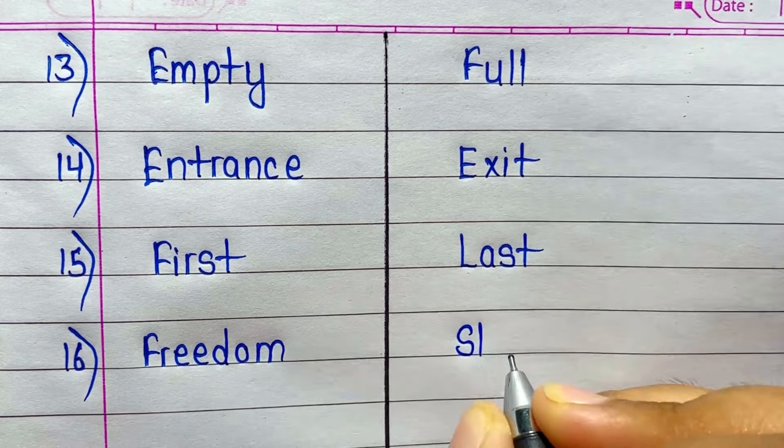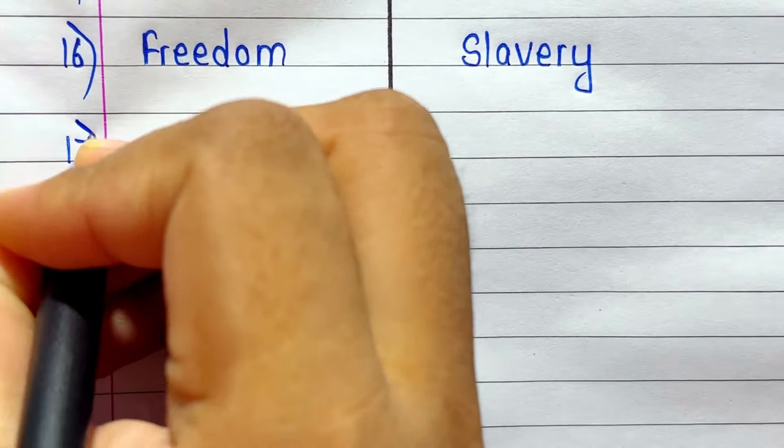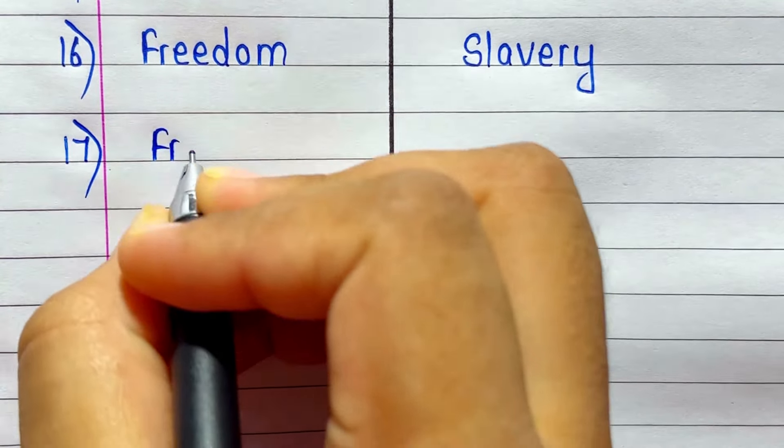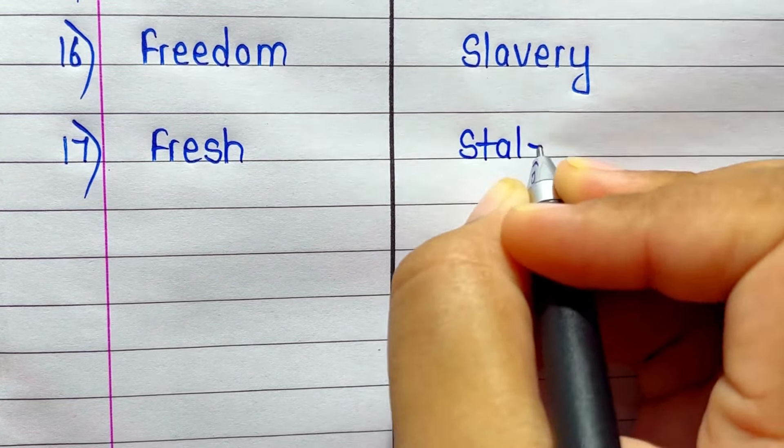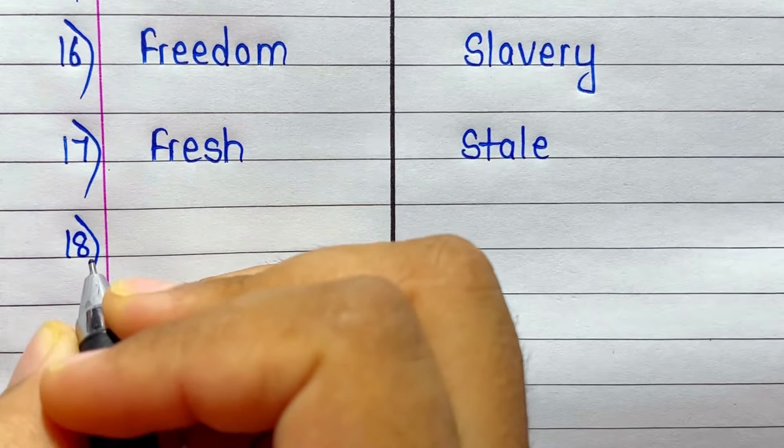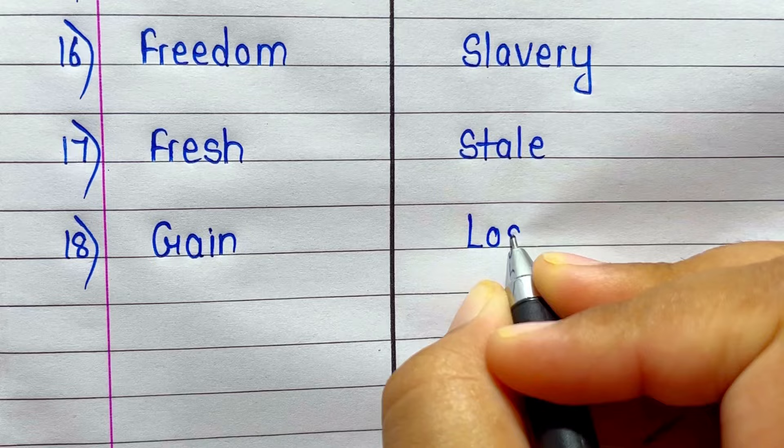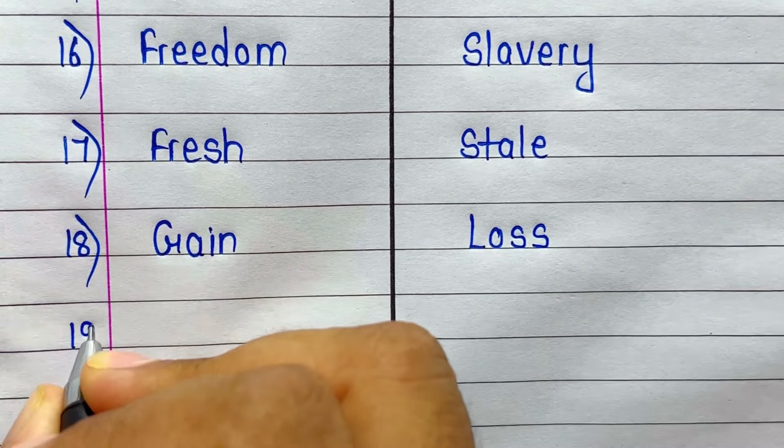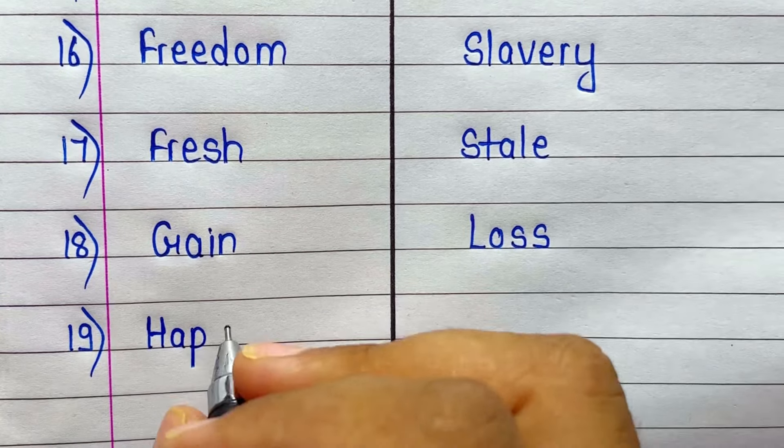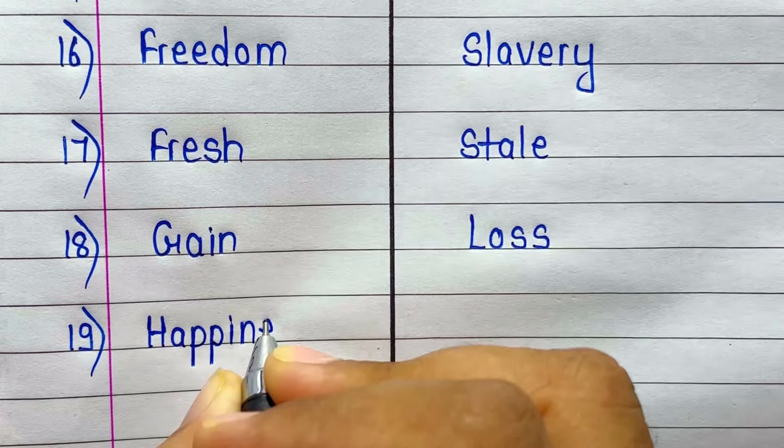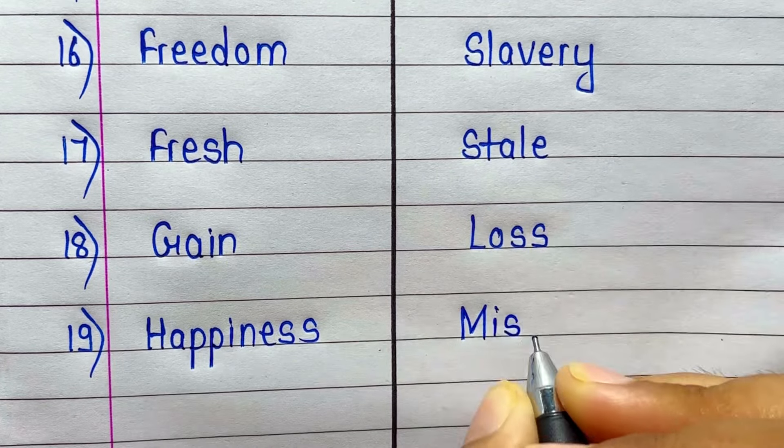Antonym of Freedom is Slavery. Fresh. Antonym of Fresh is Stale. Antonym of Gain is Loss. Antonym of Happiness is Misery.